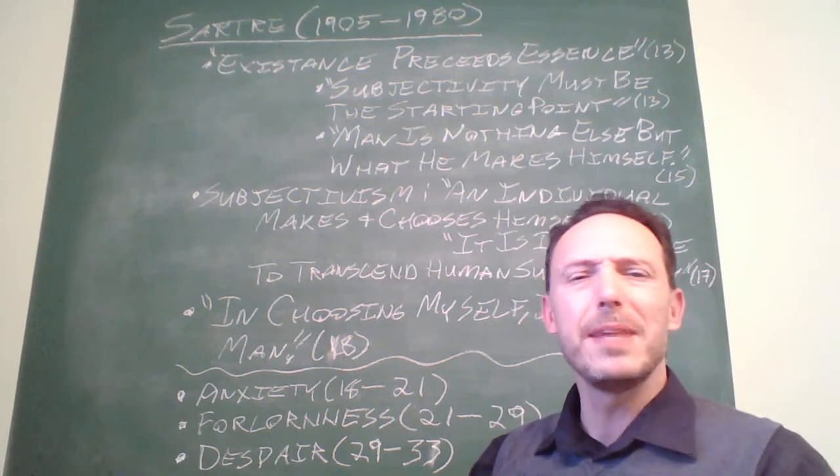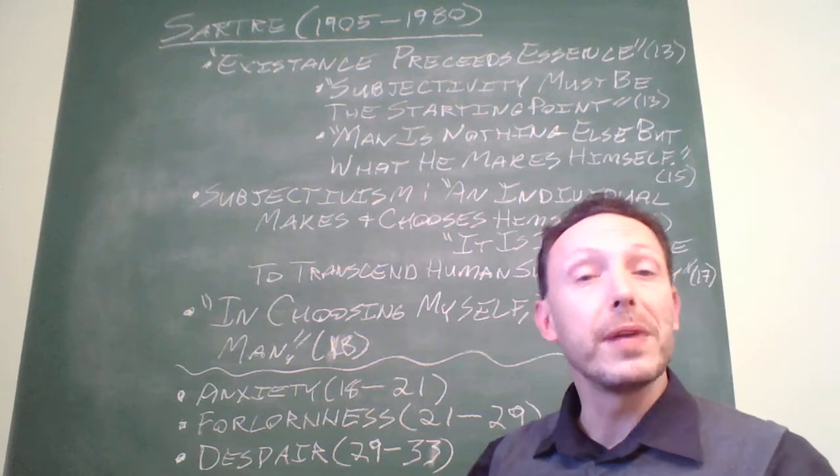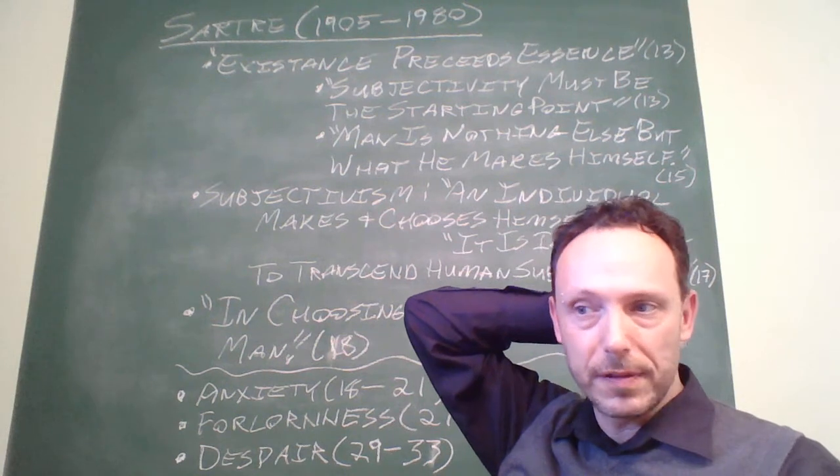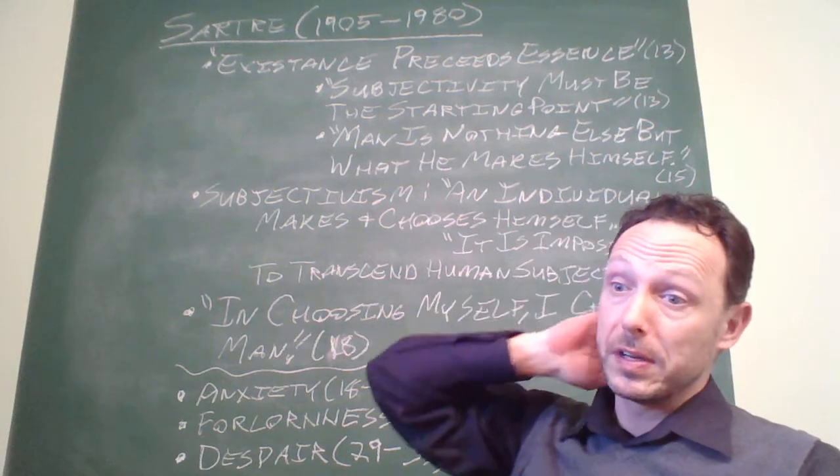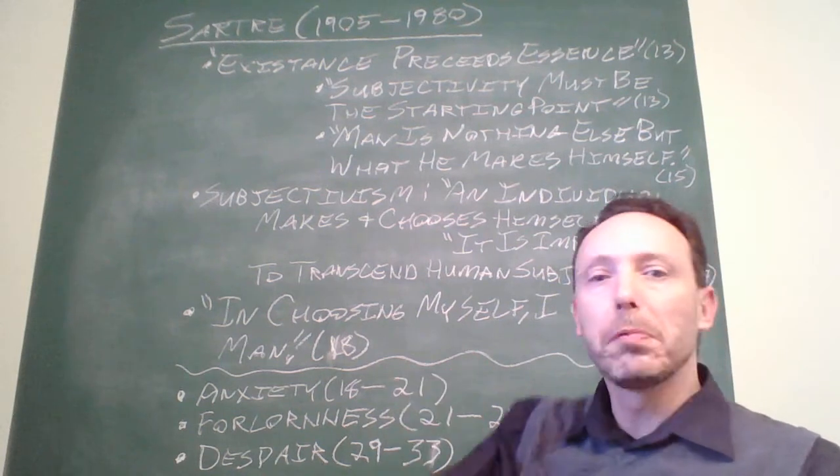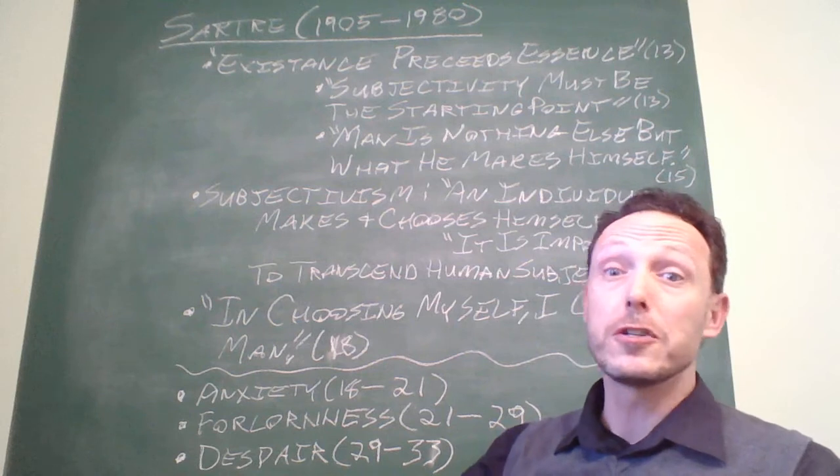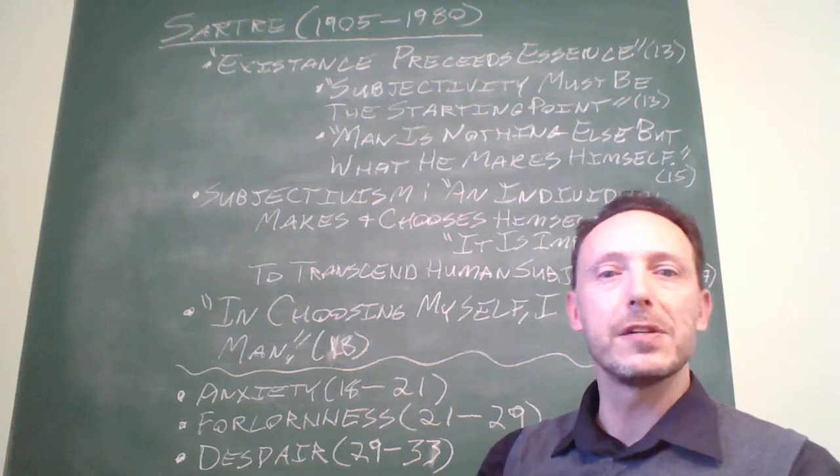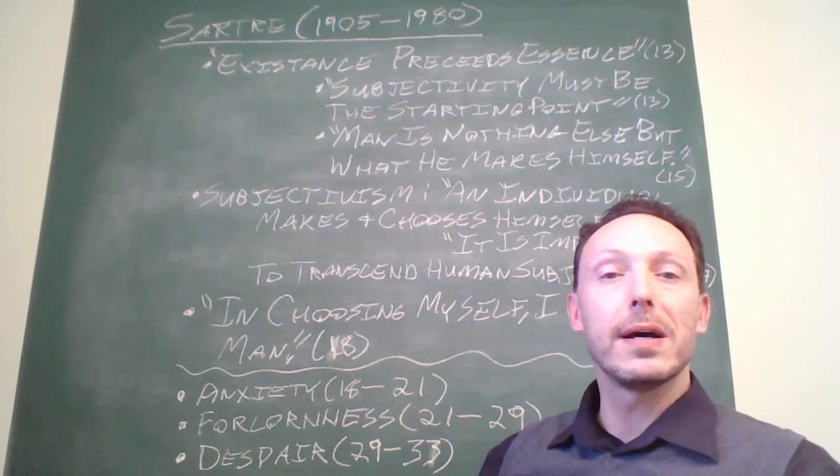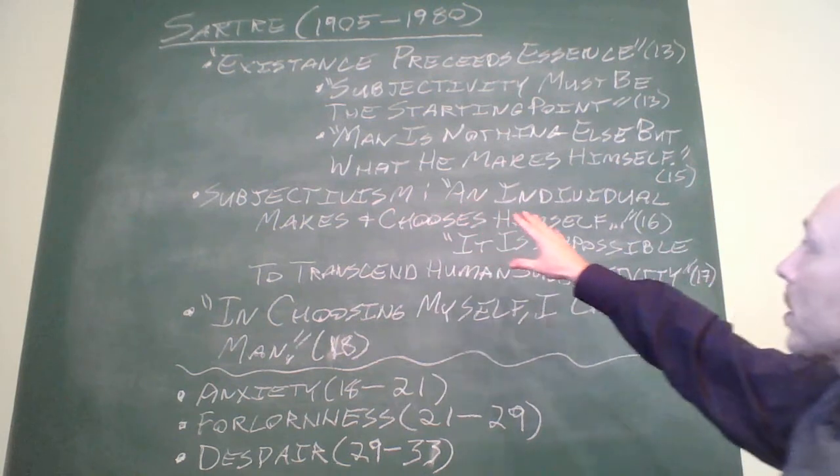what we will ourselves to be through our choices which always have a context. And I mean, effectively, we're thrown into the world to abuse a statement of another philosopher by the name of Martin Heidegger. We're thrown into the world effectively with no owner's manual, with no definition, with no reason for being and that sort of thing and then asked to give meaning to our lives and make our choices actually mean something.